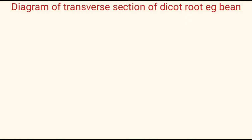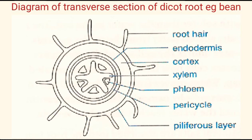Now we need to discuss the diagram of the transverse section of a dicot root — for example, bean or sunflower. This is how the diagram looks like. If asked from which organ of the plant this section is obtained, the answer should be the root because it has root hairs. The parts visible are: the epidermis, cortex, endodermis, xylem, phloem — which together form the vascular bundle — and the pericycle.